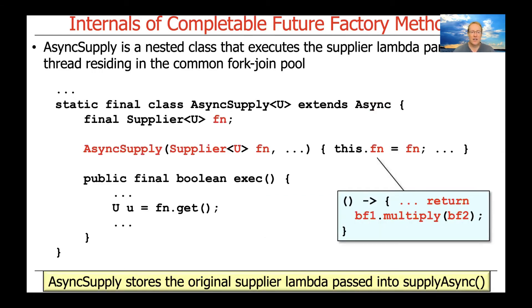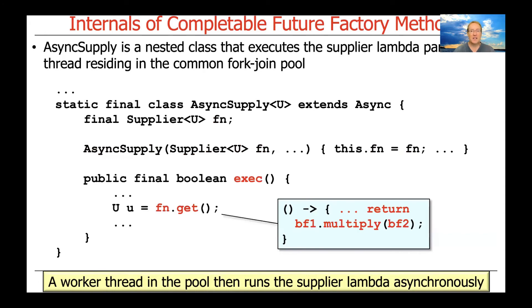Looking further, the constructor for AsyncSupply takes the supplier parameter and stores it in a final field inside the instance — basically stashing away that supplier for subsequent processing in a background thread. That subsequent processing takes place in a method called exec, which is a final method that can't be overridden. This exec method will be called back by a thread in the common fork-join pool, and when called, it will tell the supplier parameter — which holds that function — to go ahead and do its thing. fn.get() is a directive from Java's functional programming features to execute that supplier lambda originally passed to supplyAsync.